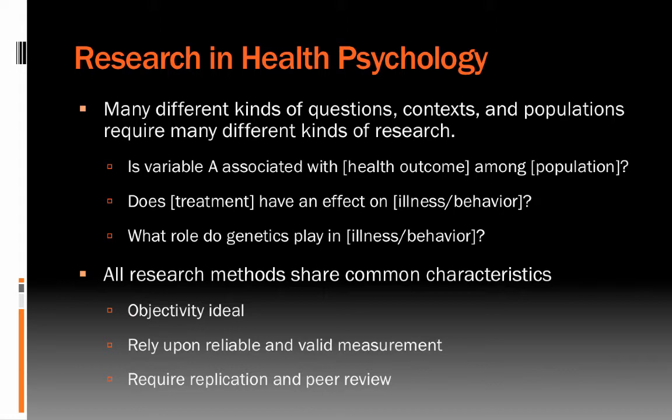Science requires replication — can we have the same findings if we do the study again, or if different people do the same or similar study? We also require peer review, where research is subject to presentation or publication in a peer review context where expert peers review that work for quality, appropriateness, and thoroughness. Each of those points is an important safeguard to make sure we derive appropriate answers from research.